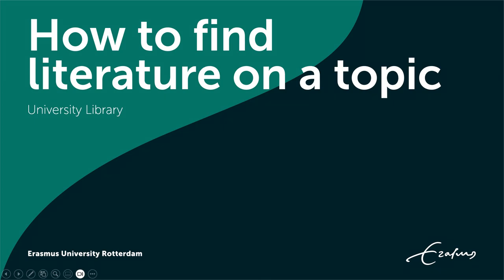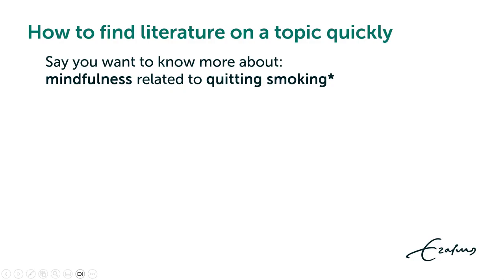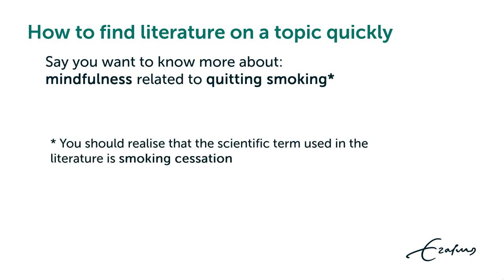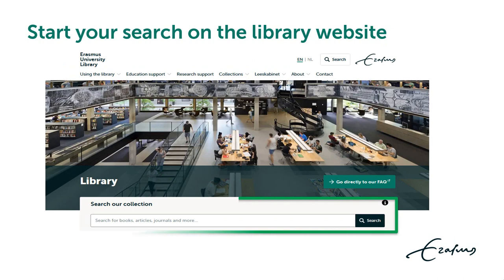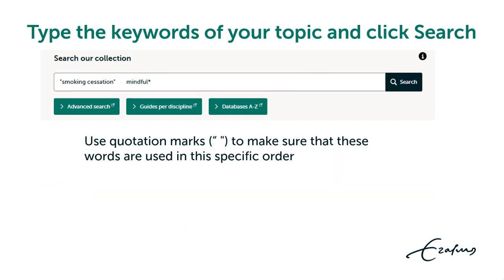How to find literature on a topic. Say you want to know more about mindfulness related to quitting smoking. The scientific term for quitting smoking is smoking cessation. Start your search in the search bar on the library website.